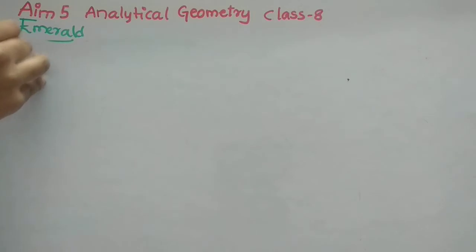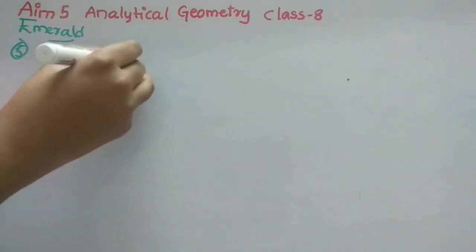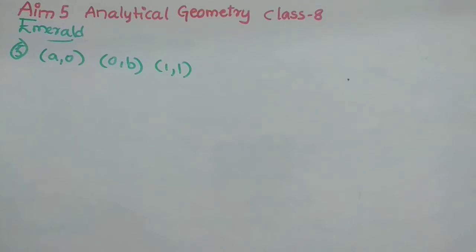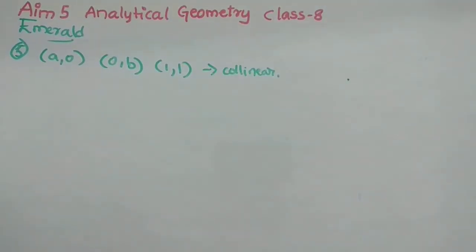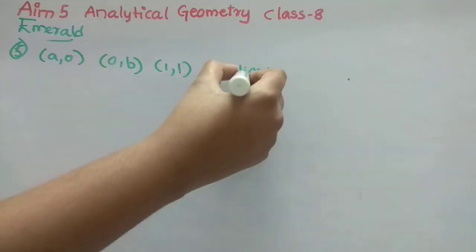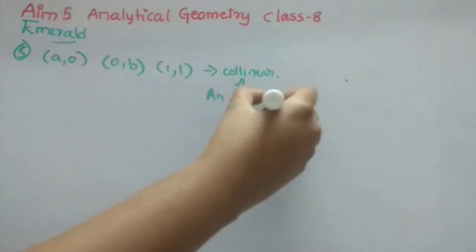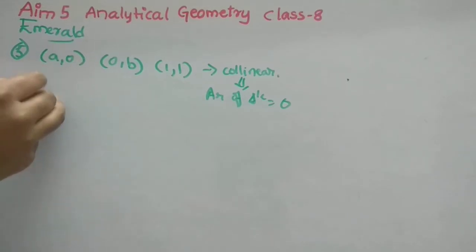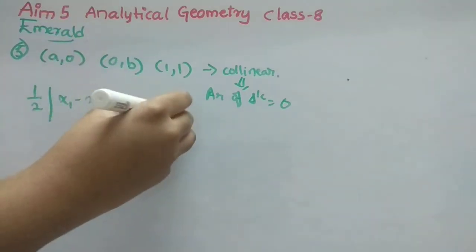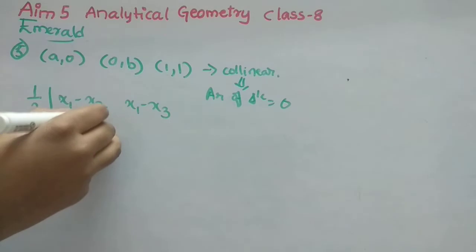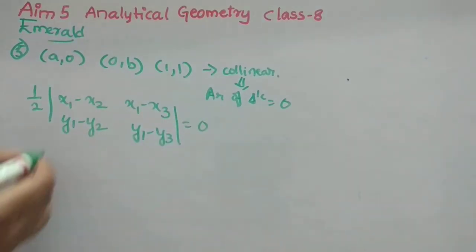Fifth question: points (a,0), (0,b) and (1,1) are given as collinear. Since points are collinear, the area of the triangle formed is zero. We set up the area formula equal to zero to find the relationship between a and b.